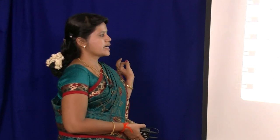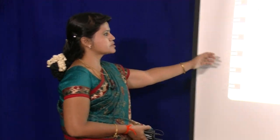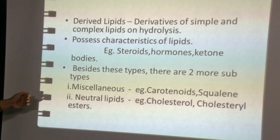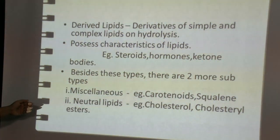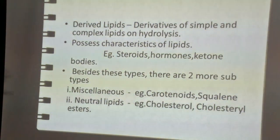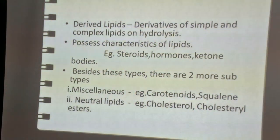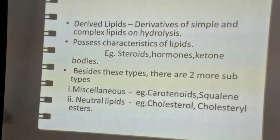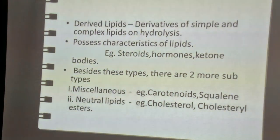Examples of derived lipids include steroids, hormones, and ketone bodies. Besides simple, complex, and derived lipids, there are two more subtypes: miscellaneous lipids and neutral lipids. Miscellaneous lipids include all groups of compounds which possess the same characteristics of lipids, put together in one category. Very good examples of miscellaneous lipids are carotenoids and squalene.